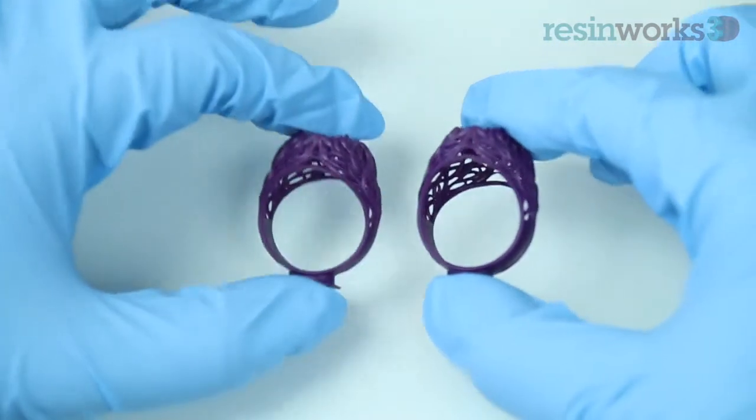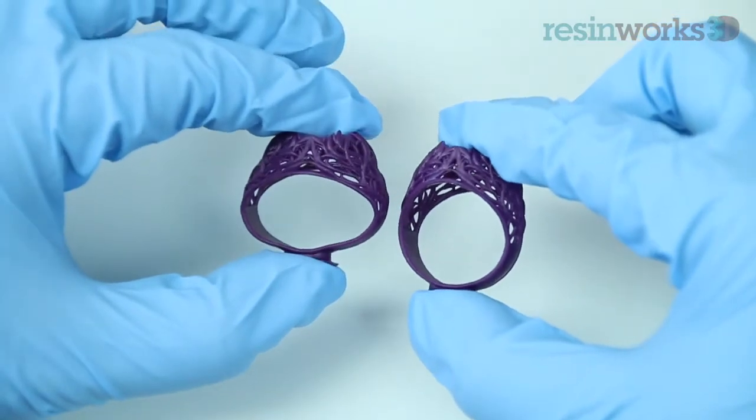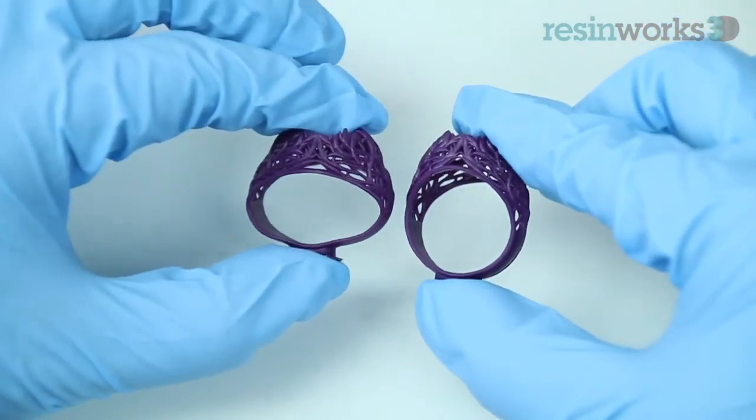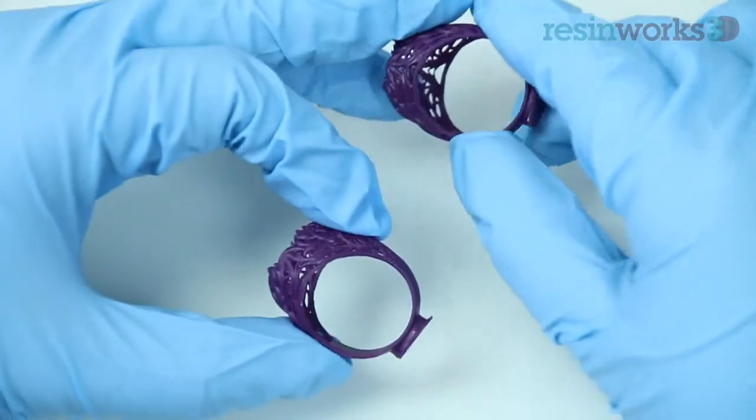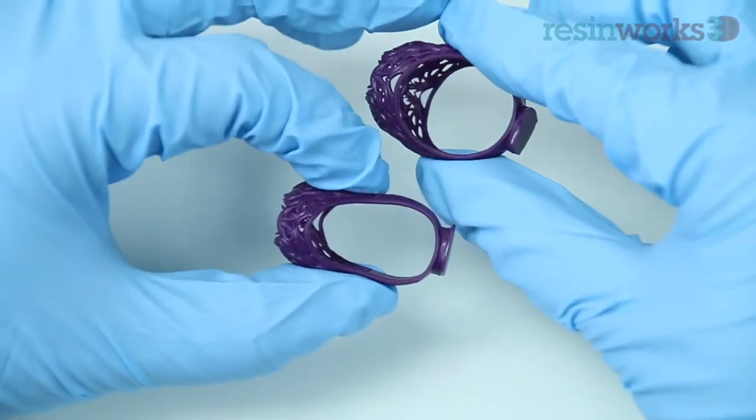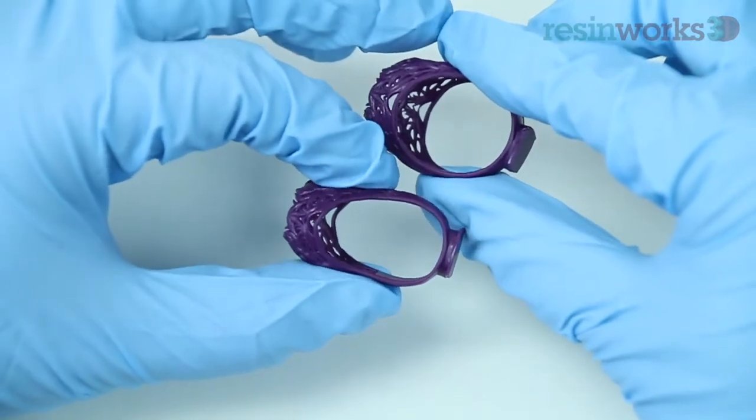After you clean the glycerin off your model with water, you can examine if the model is fully cured with certain details. A fully cured model will feel brittle and hard. If enough pressure is applied, it can break, while the uncured model is flexible.